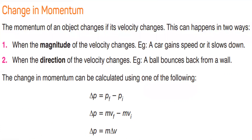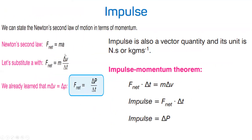Change in momentum, also called impulse, is delta P equals P final minus P initial, which equals m times V final minus m times V initial. We can also write delta P equals m times delta V. This is the first formula for impulse. It also comes from Newton's second law: F net equals m times a, and since a equals delta V over delta T, we get F net times delta T equals m times delta V. So impulse equals F net times delta T, and also equals delta P.